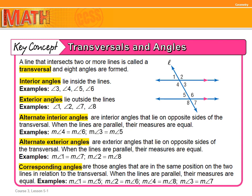Alternate interior angles are interior angles that lie on opposite sides of the transversal. When the lines are parallel, their measures are equal — very important to remember this. So the measurement of angle four is equal to the measurement of angle six. Those are alternate interior angles — they are on the opposite side of the transversal. The measurement of angle three is equal to the measurement of angle five.